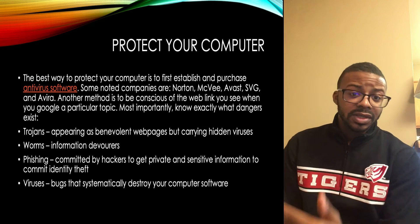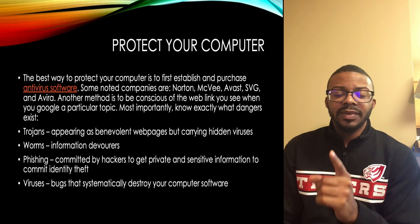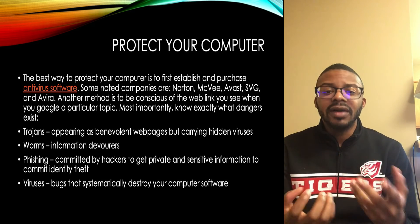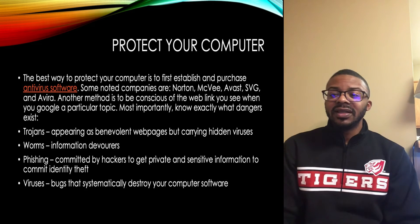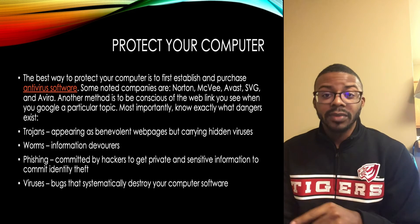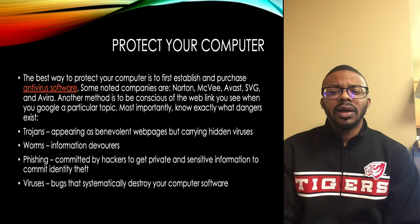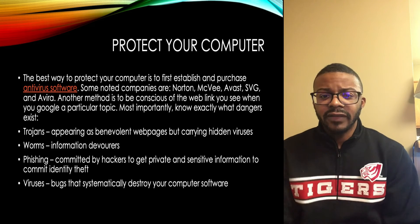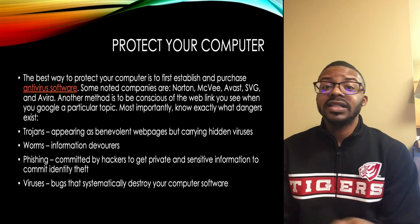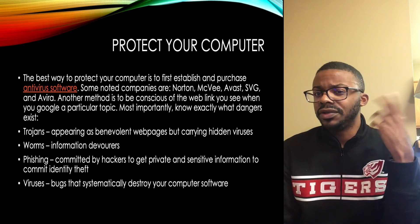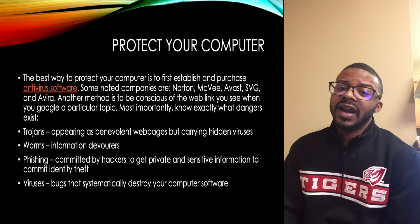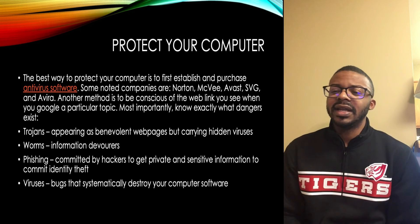Most importantly, know what types of dangers exist out there. Trojans: appearing as benevolent web pages but carrying hidden viruses — very nasty ones, coming from the idea of the Trojan horse. Worms: these are information devourers. There are other more dangerous worms out there that could do far worse damage, but these are what people in education most need to know about. Phishing: committed by hackers to get private and sensitive information to commit identity theft — the worst cases happen within school buildings or through advertisements. We've had four phishing attacks at Wilcox Central over the past semester. And finally, viruses: those bugs that systematically destroy your computer software from the inside — these are the ones you don't want.